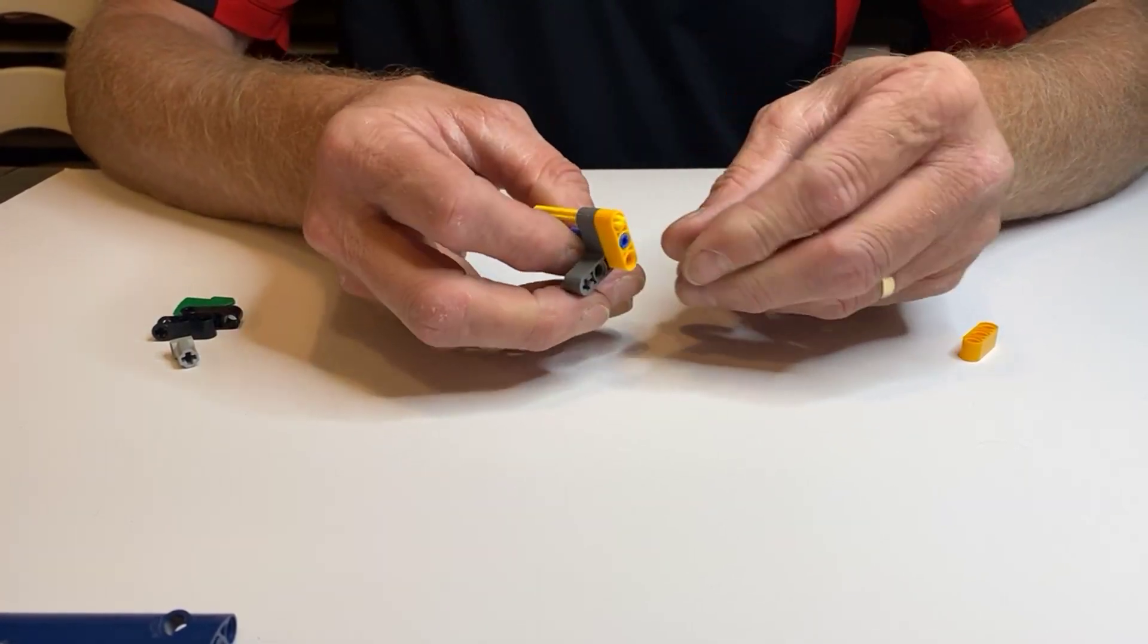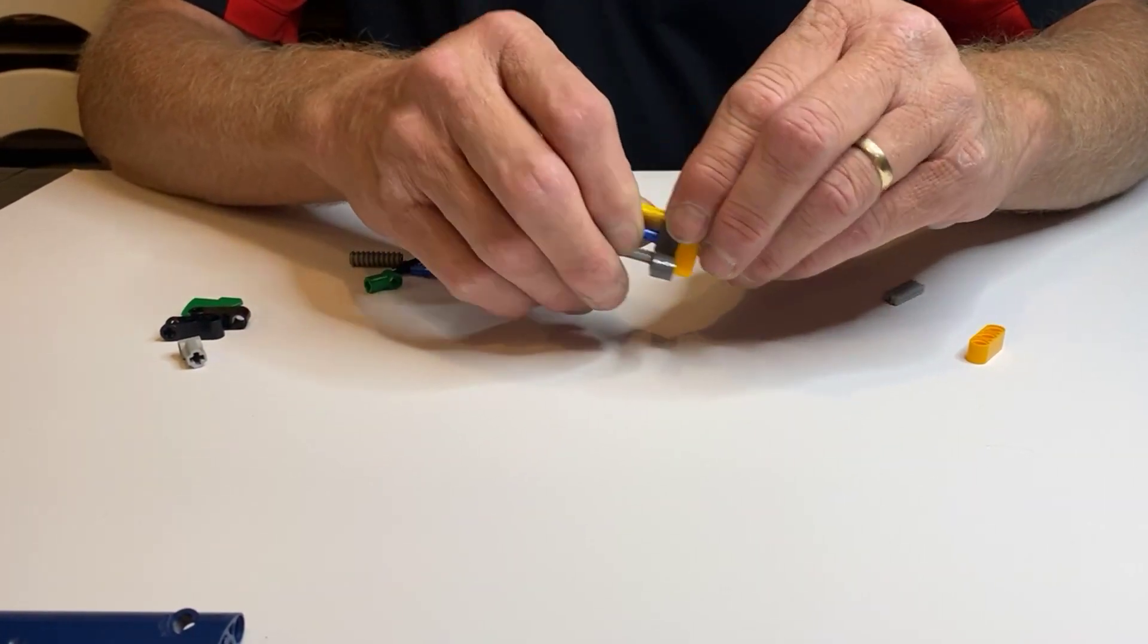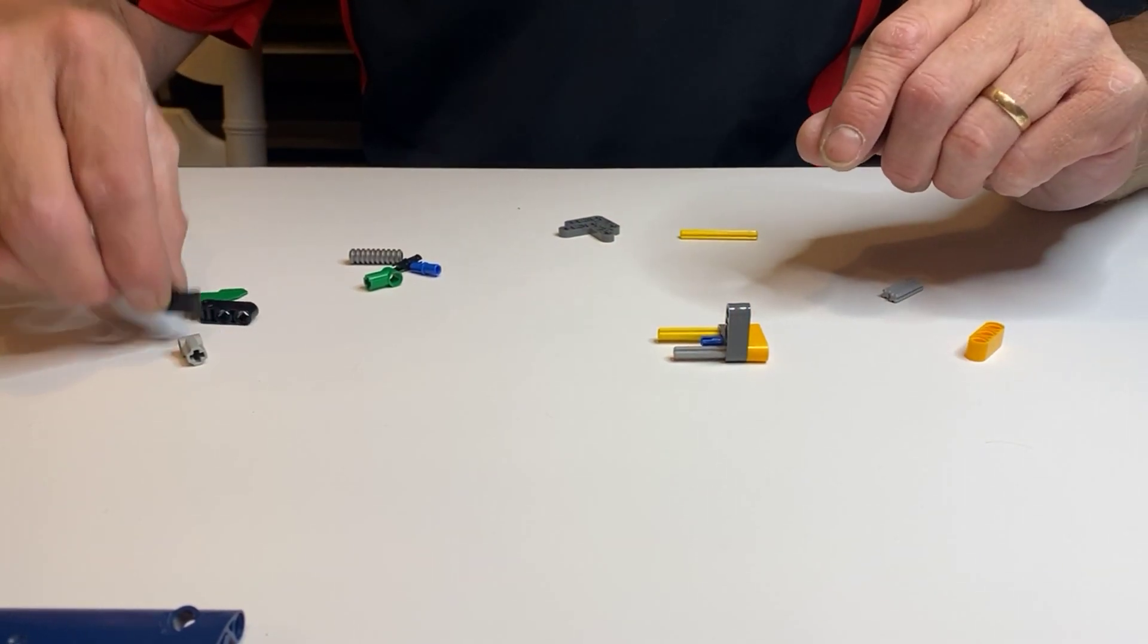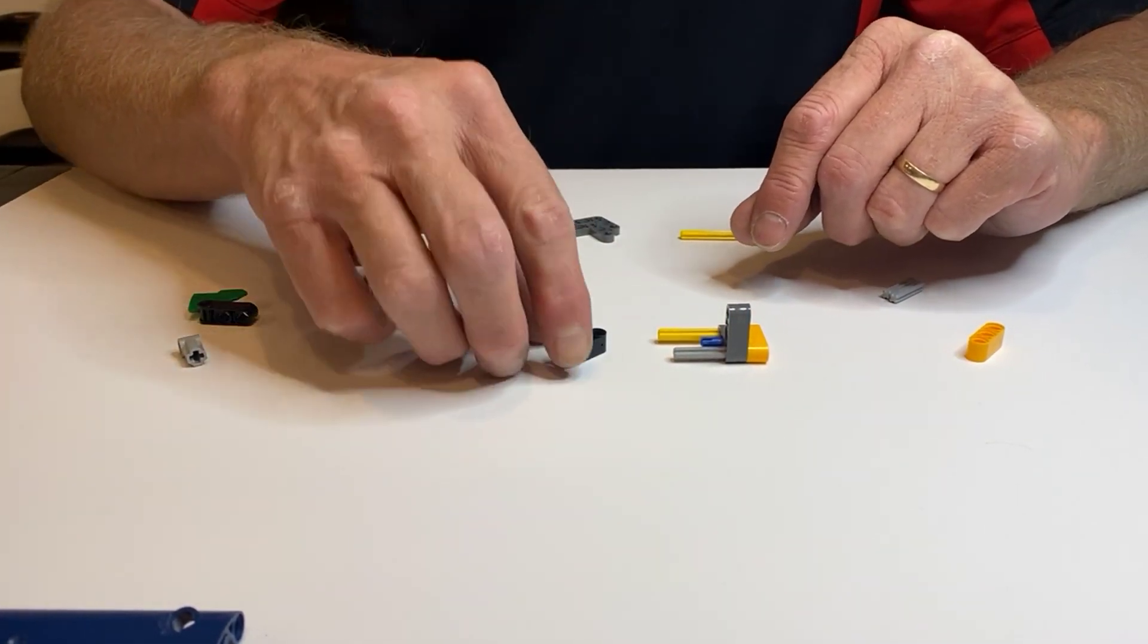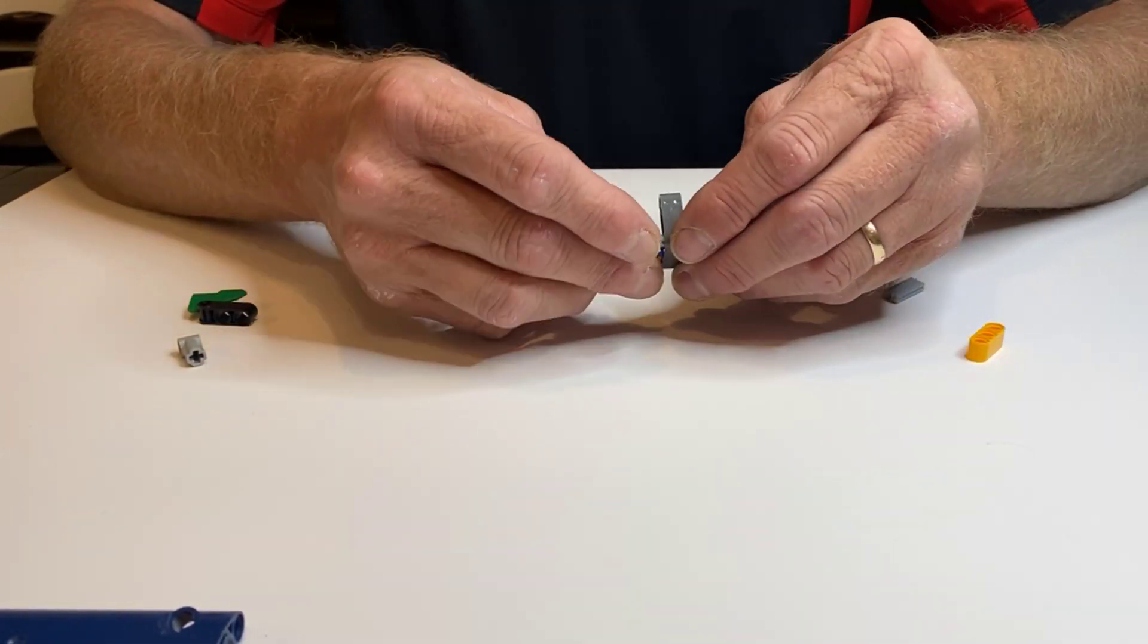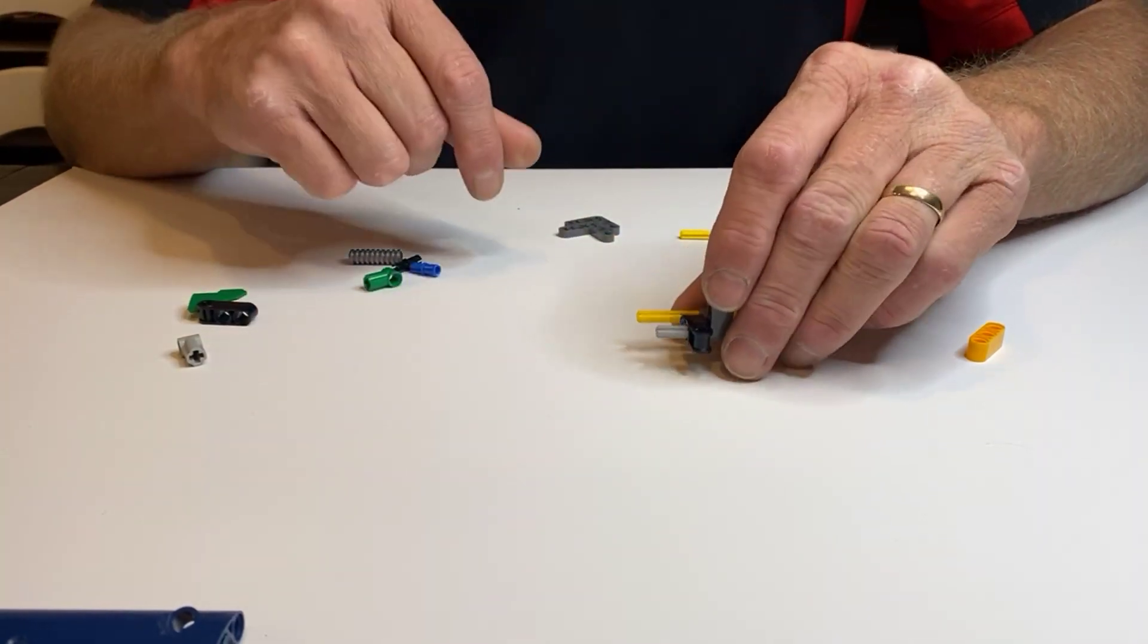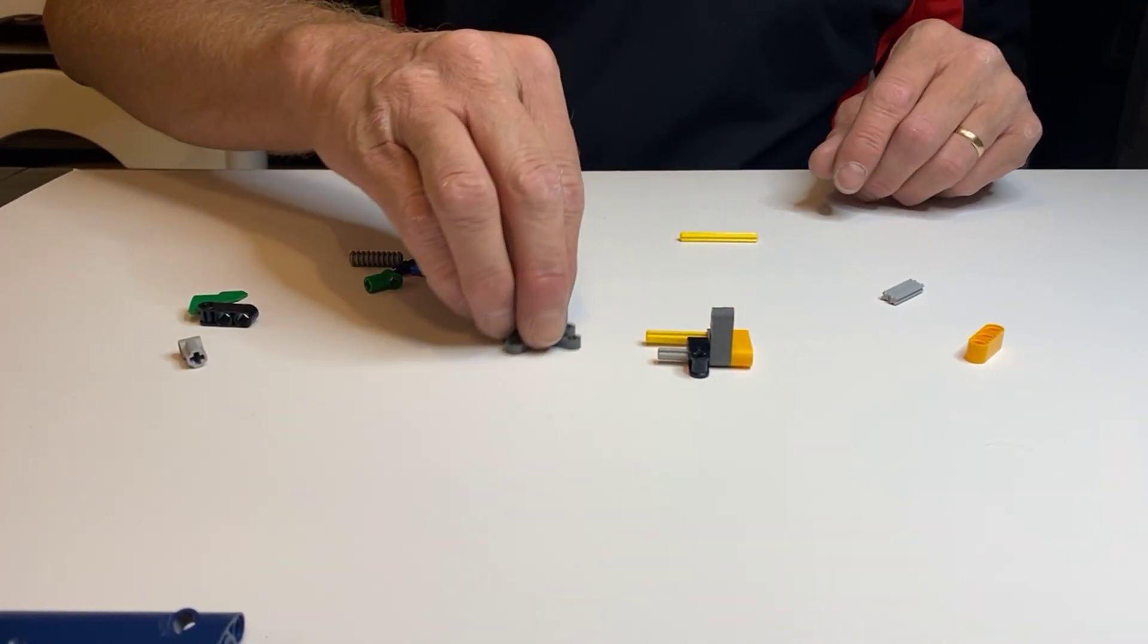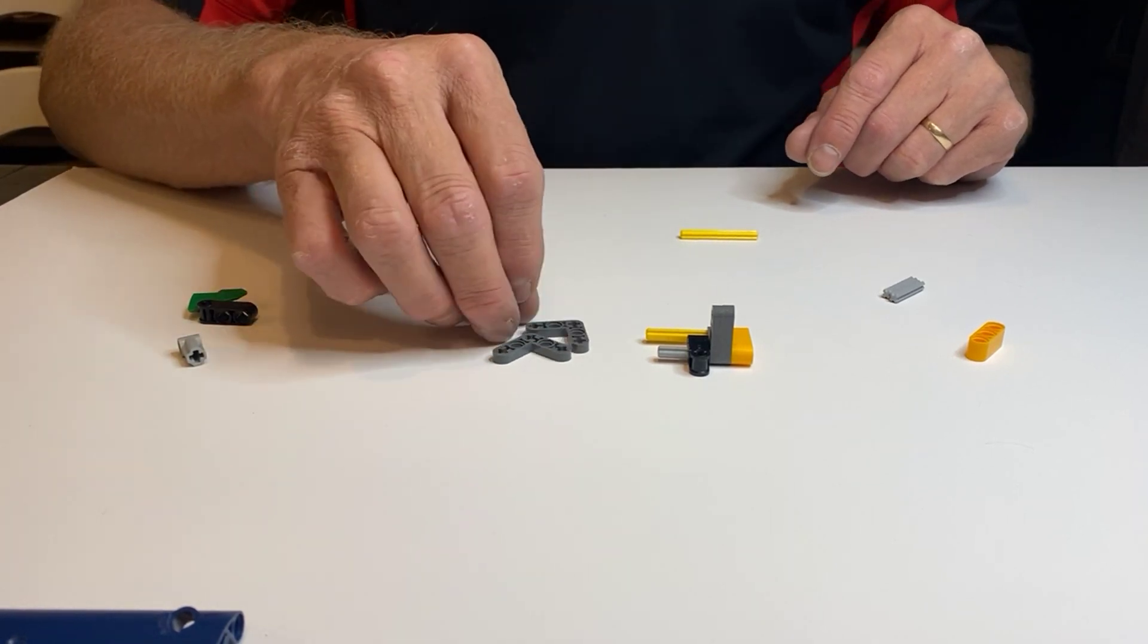Next, we're going to take one of our catches, one of our black catches. Stick it on there like that, and we're going to take the other two 3x3 L-beams.